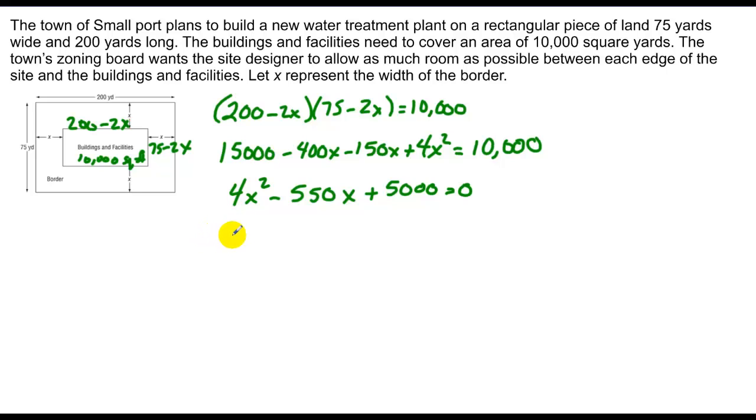And even though it's large, I can use the quadratic formula to solve. So I take the opposite of b, which is 550 plus or minus square root of negative 550 squared minus 4 times 4 times 5,000 over 2 times 4.